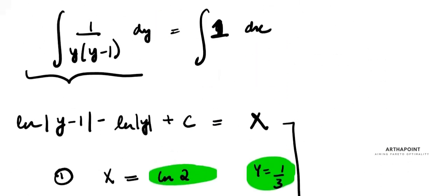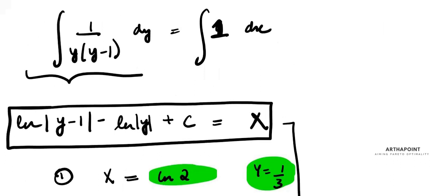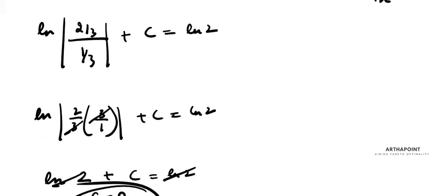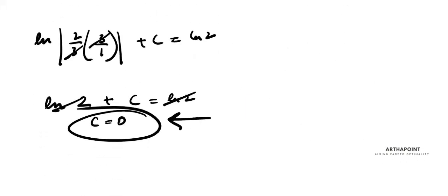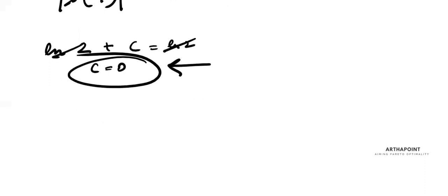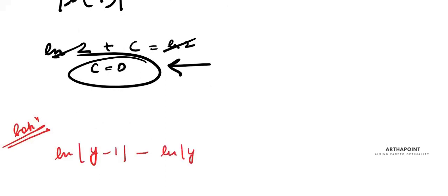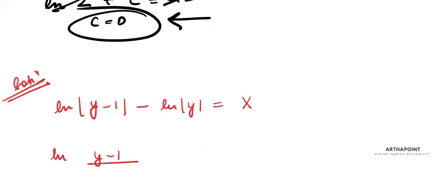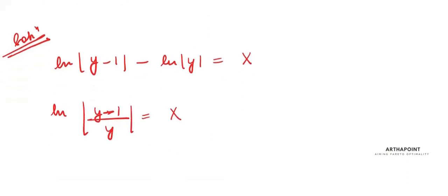Going back to the equation and substituting c = 0, the final solution of the differential equation is ln|y-1| - ln|y| = x, which simplifies to ln|(y-1)/y| = x.